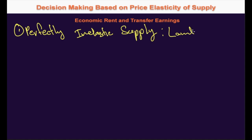In other words, the transfer earnings of land for the economy as a whole is actually zero. Transfer earnings is the minimum amount that you need to pay in order to keep a factor of production available. For land it is zero because you don't need to pay anything for its existence. So the whole earnings of land are a functionless surplus — whatever price land earns is not required to keep it in existence or make it available for society.